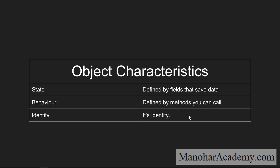An object has three characteristics: state, behavior, and identity. It is very simple to understand these three.